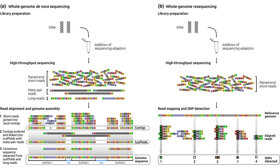De novo sequencing and assembly is typically applied to organisms where no reference genome is available, or the available reference is of poor quality. Genomes that have not been sequenced before must be assembled via a de novo approach. Following sequencing, this assembly can then be used for additional analyses and as the basis for future resequencing projects.